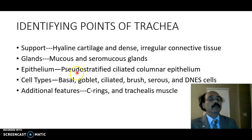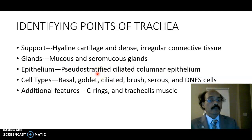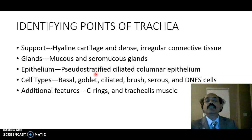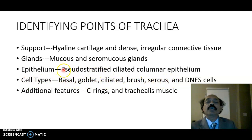Underneath the epithelium we have the lamina propria, then we have the submucosa, then the perichondrium, then the C-shaped cartilage, then again the perichondrium, and then we will get the adventitia. So we have these six types of cells present in the pseudostratified ciliated columnar epithelium.